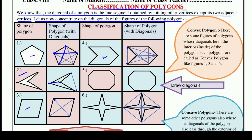लेकिन जो fifth figure है, इसमें diagonal आपको खुद से बनाने हैं — ताकि हमें भी पता चल जाए कि diagonals कैसे बनते हैं। तो हम इसको draw करने की कोशिश करते हैं; आप भी मेरे साथ कीजिएगा। इस point को और इस point को हम join कर सकते हैं, इस point को और इस point को join कर सकते हैं, इसको और इसको भी join किया जा सकता है। So these are all the diagonals — you can see here we can join.